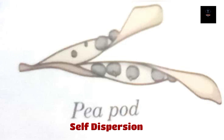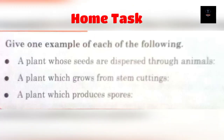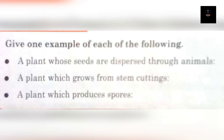Now you are able to explain the dispersion of seeds and how the agents of dispersion work — by wind, by water, and by animals. I am going to give an assignment: give an example of a plant whose seeds are dispersed through animals, a plant which grows from stem cuttings, and a plant which produces far-flung seeds. You have to give an example for each.